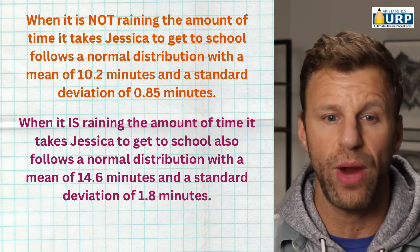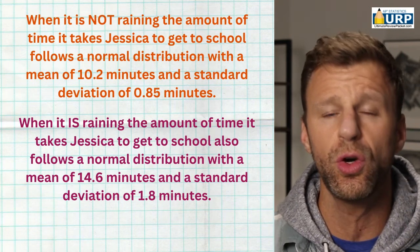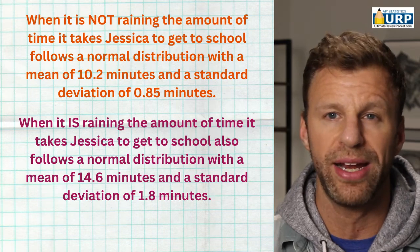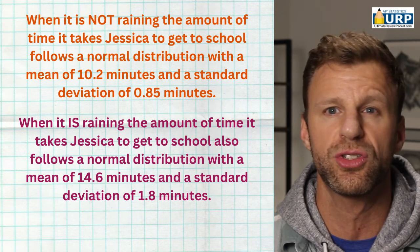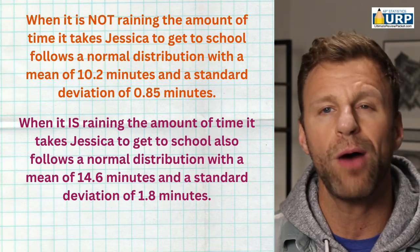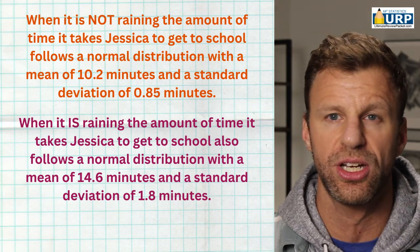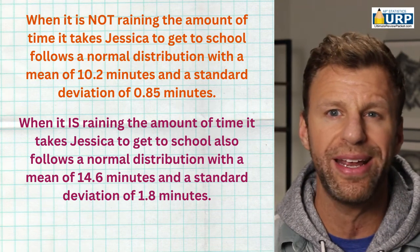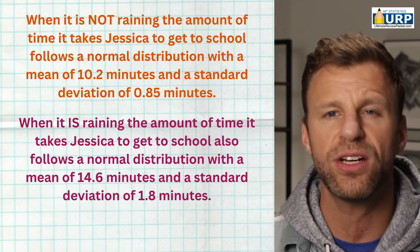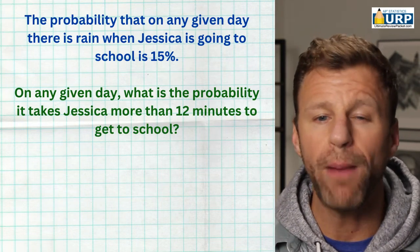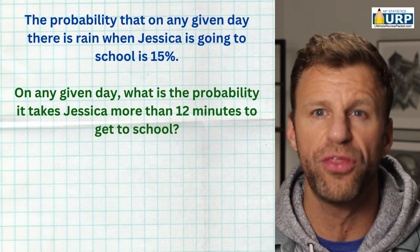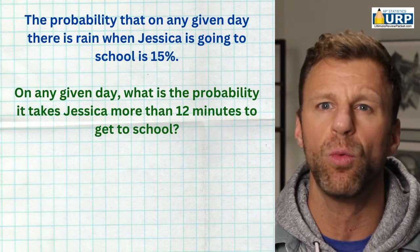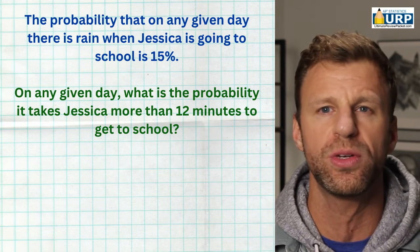Here's the question. When it is not raining, the amount of time it takes Jessica to get to school follows a normal distribution with a mean of 10.2 minutes and a standard deviation of 0.85 minutes. When it is raining, the amount of time also follows a normal distribution, but because of slower traffic, the mean is 14.6 minutes with a standard deviation of 1.8 minutes. The probability that on any given day there is rain is 15%. The ultimate question: on any given day, what is the probability that it takes Jessica more than 12 minutes to get to school?